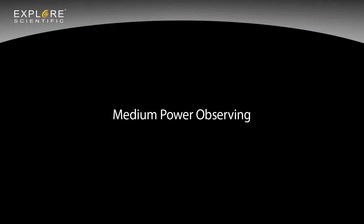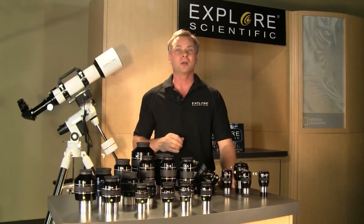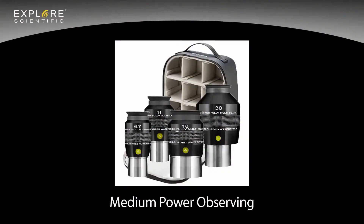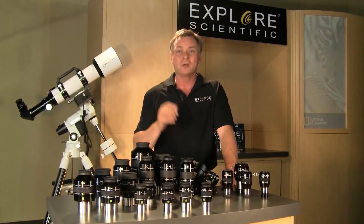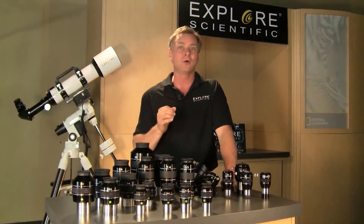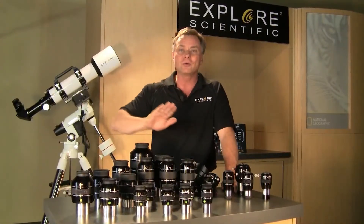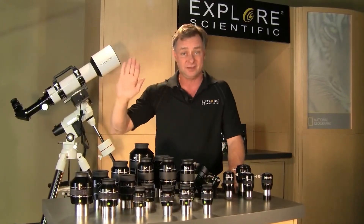Now that you understand lowest useful magnification and highest useful magnification, you need to calculate the medium steps in power so that you can get the best observing potential possible. Many astronomers own several eyepieces that range from lowest to highest power for their telescope. Medium power eyepieces are also selected by magnification, apparent field of view, and eye relief. Many astronomers begin their observations at low or lowest power and then gradually increase power until the object is best seen.